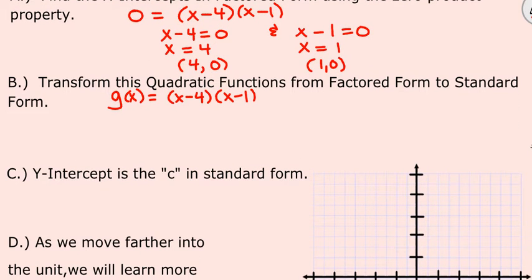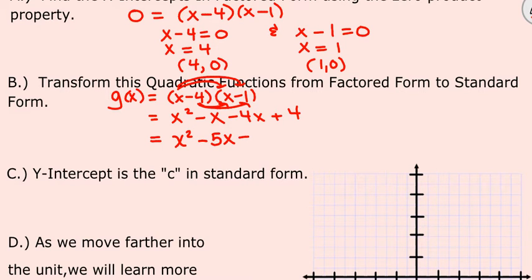So let's foil this. First, x times x is x squared. Outside, x times negative 1, negative 1x. Negative 4 times x, negative 4x. Negative 4 times negative 1 is positive 4. Now we're going to go ahead and combine our like terms, negative x and negative 4x is negative 5x, and then plus 4.